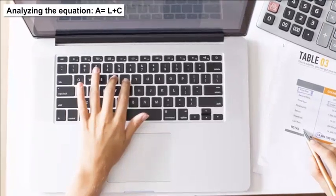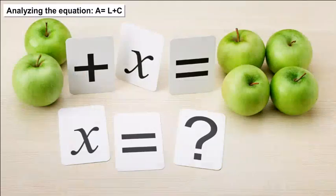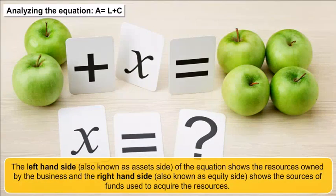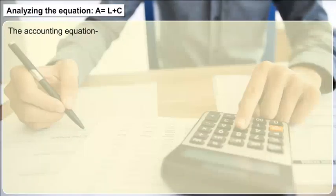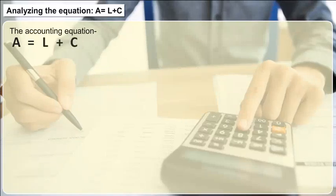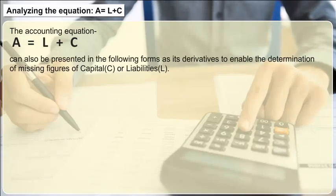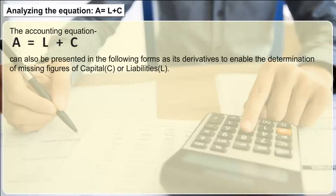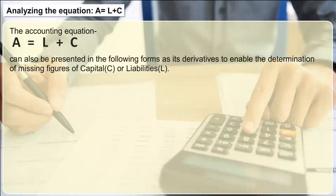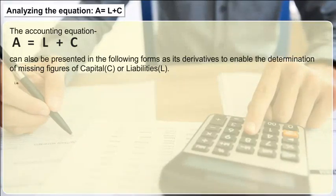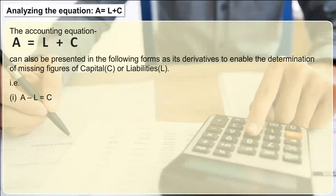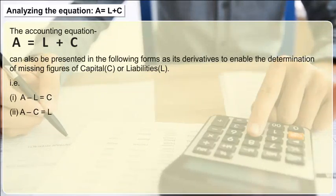Analyzing the equation A = L + C: the left-hand side, also known as the asset side, shows the resources owned by the business, and the right-hand side, also known as the equity side, shows the sources of funds used to acquire those resources. The accounting equation can also be presented in derivative forms to determine missing figures: (1) A − L = C, and (2) A − C = L.